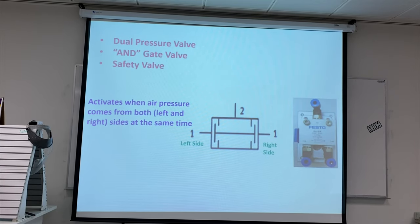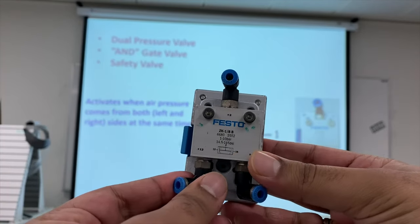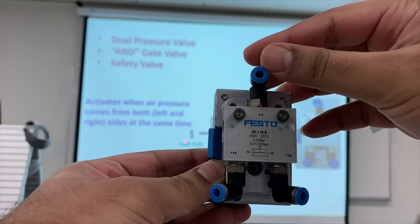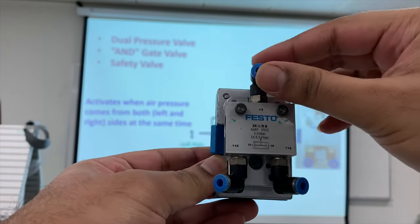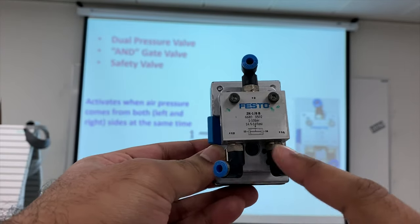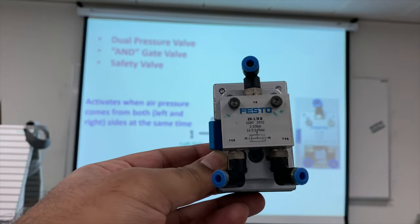The dual pressure valve means that two closed valves A and B must be pushed together for the system to be active. This is the symbol — on the left side and the right side air enters, and port 2 is the output port. For port 2 to activate, air must come from both directions. That is why this is called the dual pressure valve or AND gate.